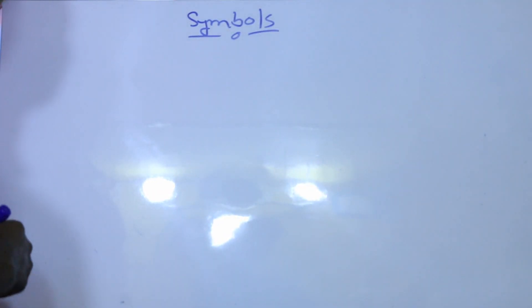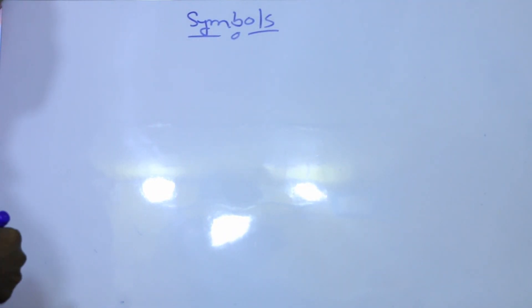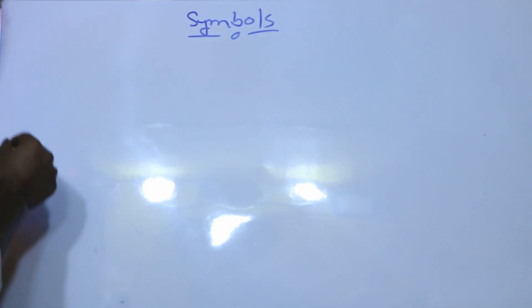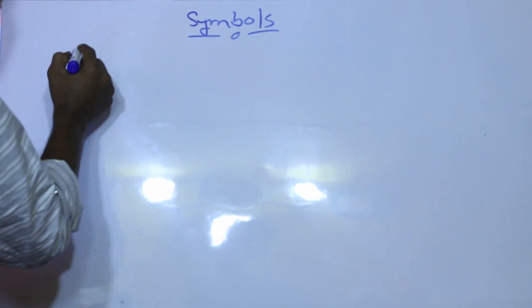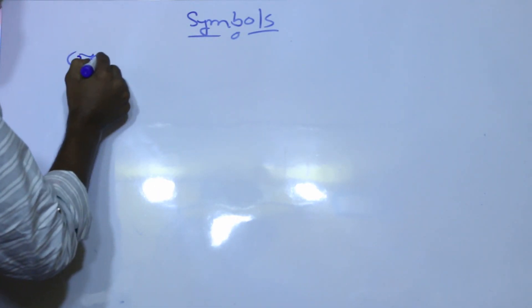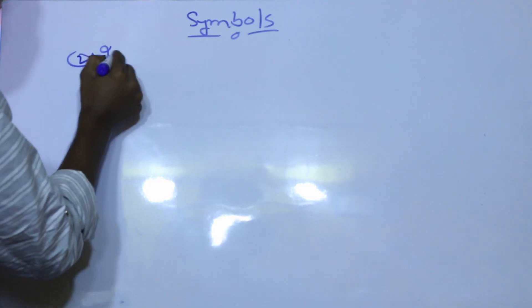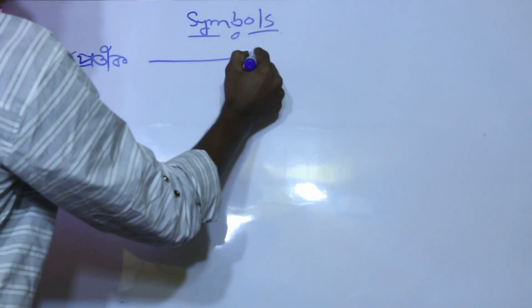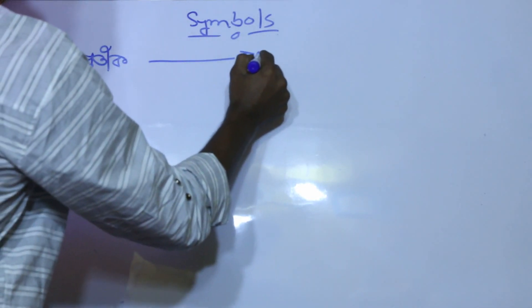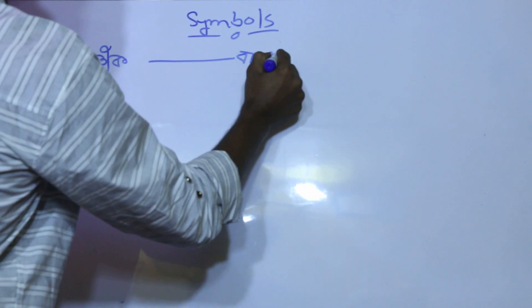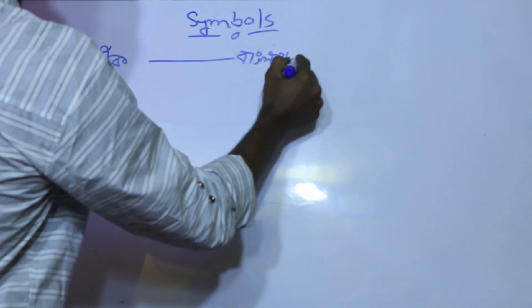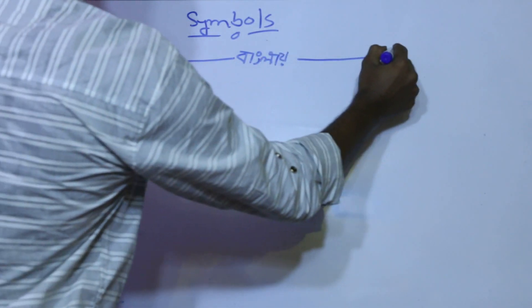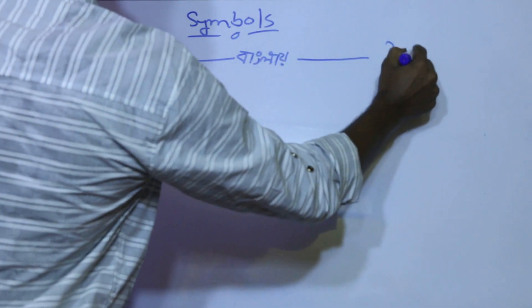So guys, you can just draw the part right here, put the symbols on the first part of the swim balls, and put the symbols in the first place.